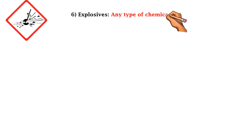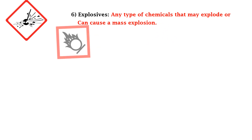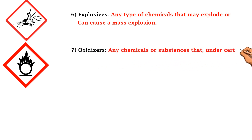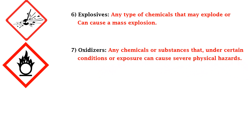The fifth type is corrosion — this pictogram shows corrosion of materials and skin. The sixth type is explosive hazards — any type of chemical that may explode or can cause a mass explosion. The seventh chemical hazard is oxidizers — any chemical or substance that, under certain conditions or exposure, can cause several physical hazards.